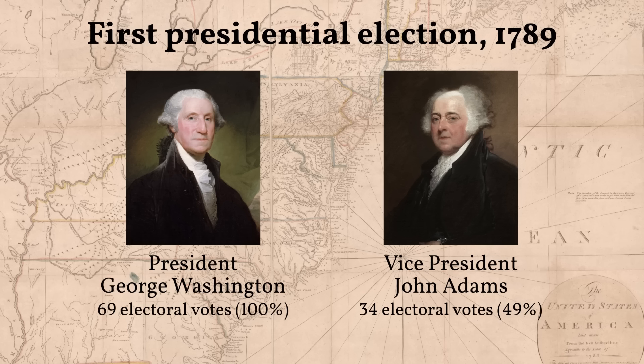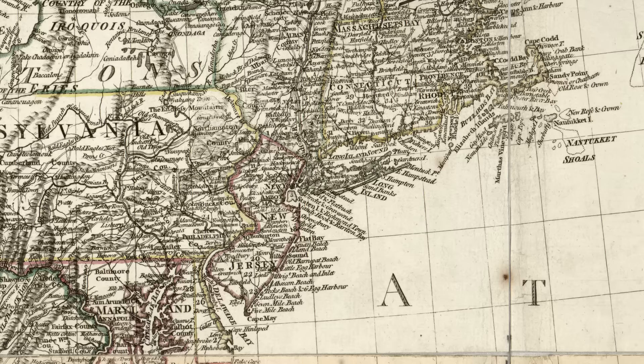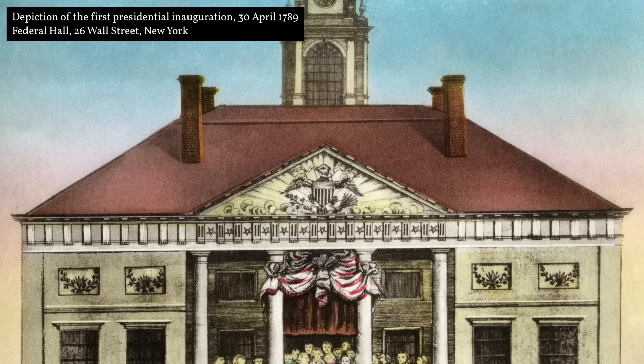Those are the election results: George Washington was elected president and John Adams was elected vice president. They both traveled to New York, which was the first seat of the federal government, and were sworn in in the spring of 1789 to begin their first terms, respectively.